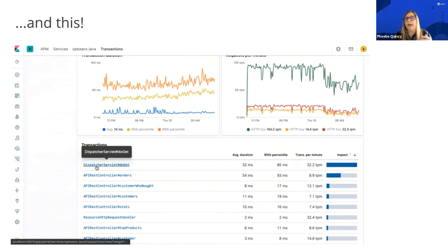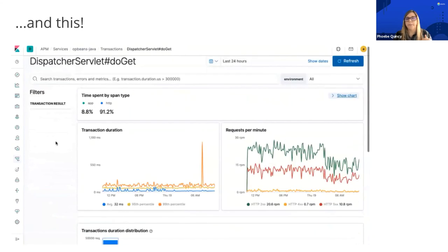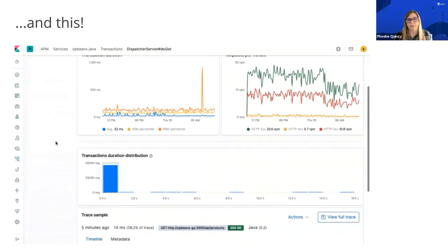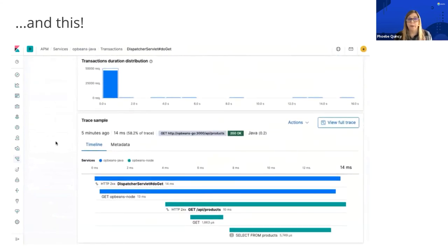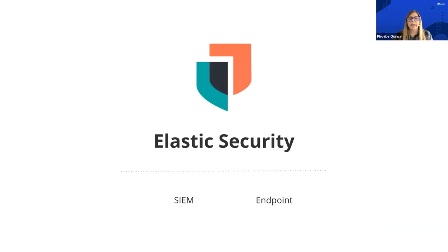That's a great example of why having a single pane of glass to view what's happening in your systems makes it so much easier for the people who have to monitor these things. Lastly, the last solution is Elastic Security, and I'm going to touch very briefly on this, and then Kami is going to take over and dig more deeply into security.